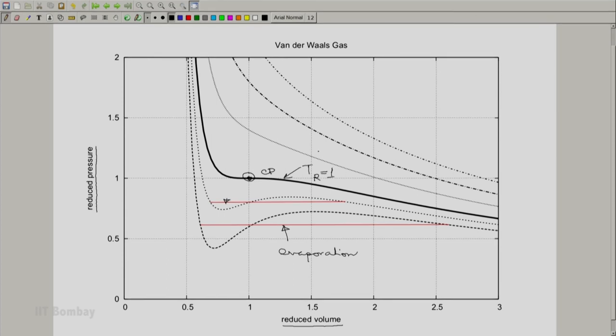Whereas this pertains to 1.1, this pertains to 1.2, this pertains to 1.3. Similarly, these two isotherms below that, they pertain to 0.95 and 0.90, respectively.